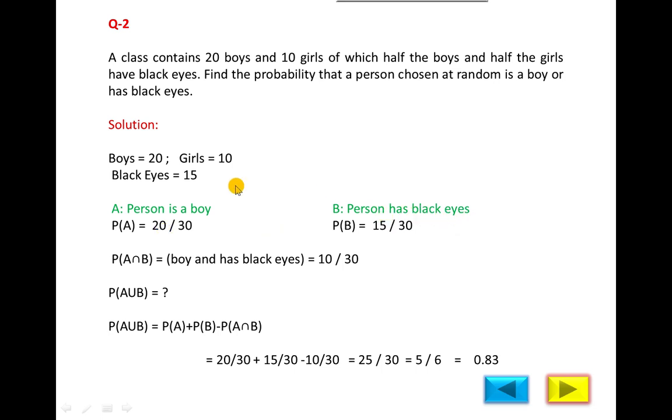B is person has black eyes. How many black eyes? 15 out of 30, so 15 upon 30. If you calculate, you will obtain the probability between 0 and 1.